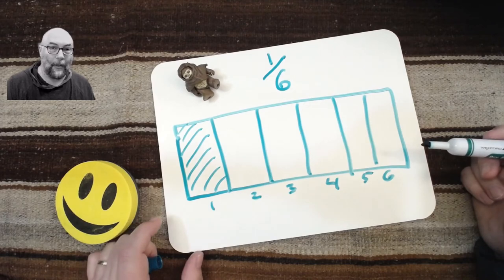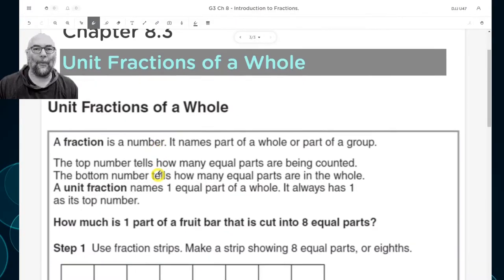Now, let's have a look at it on the whiteboard. The workpages say, a fraction is a number. It names part of a whole or part of a group. The top number tells how many equal parts are being counted. The bottom number tells how many equal parts are in the whole. A unit fraction names one equal part of a whole. It always has one, one, as its top number.